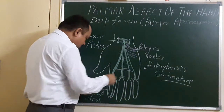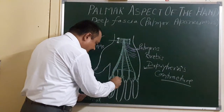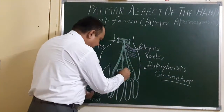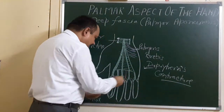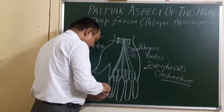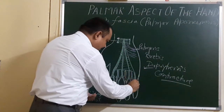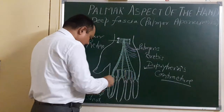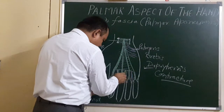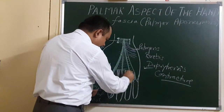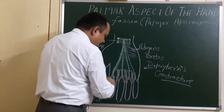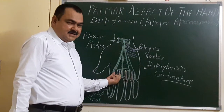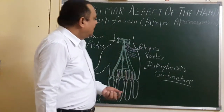One important thing: between these two slips, digital vessels and nerves pass. Digital vessels and nerves pass between two adjacent slips. Another structure which passes here is the lumbricals — lumbricals also pass through this space. So this space gives passage for the lumbricals and for the digital vessels and nerves. This is all about the palmar aponeurosis.